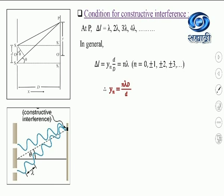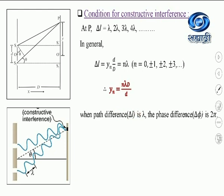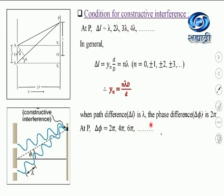We have seen the condition for path difference for constructive interference. Now let us see the condition for the phase difference between the two waves for constructive interference. When the path difference between the two waves is lambda, the phase difference delta phi should be equal to 2π. When path difference is lambda, the phase changes by 2π. For constructive interference at point P, delta phi should be equal to 2π, 4π, 6π, and so on — corresponding to path differences of lambda, 2 lambda, and 3 lambda respectively.